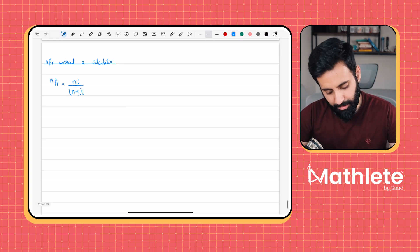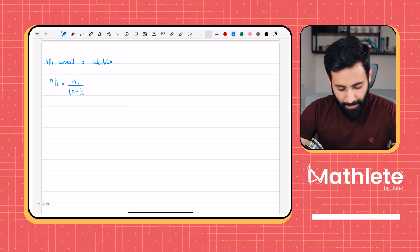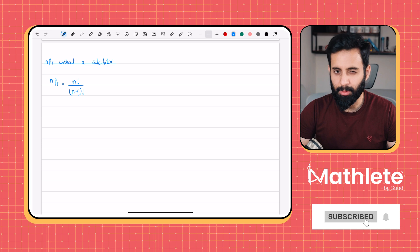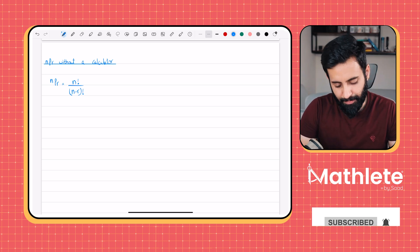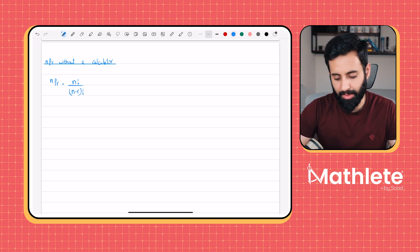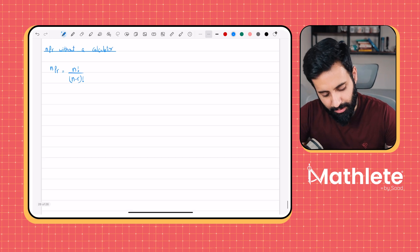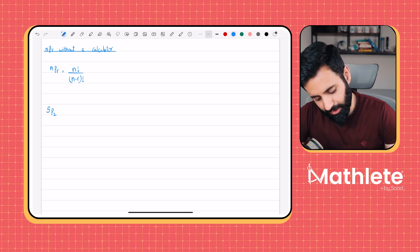So what I'm going to do is I'm going to work out a few NPR sums, and I'm going to do it with the formula, and I'm going to do it directly, so that you guys can see how they're both related. So let's say you have 5P2. I'll do it with the formula and I will also do it directly.